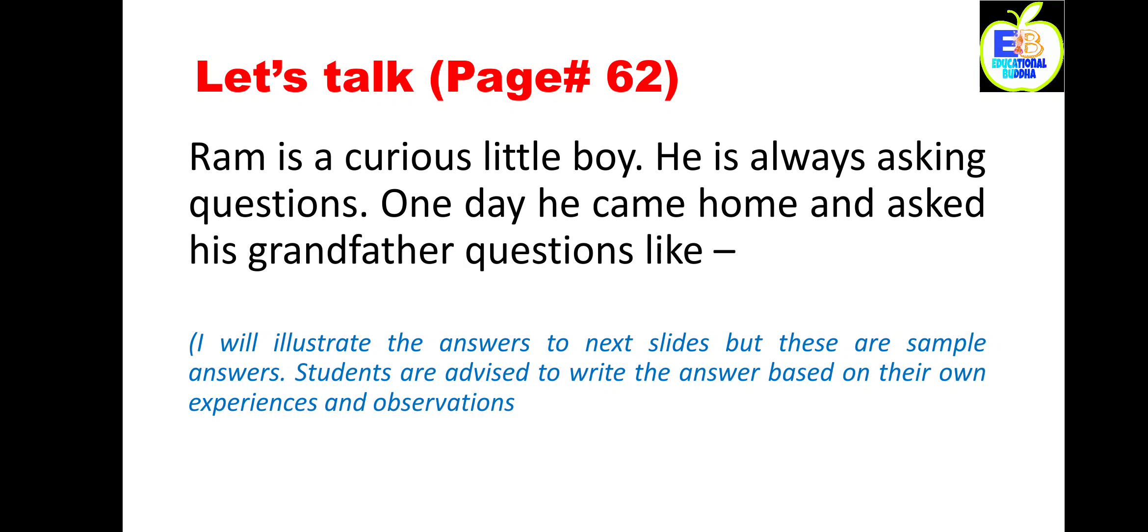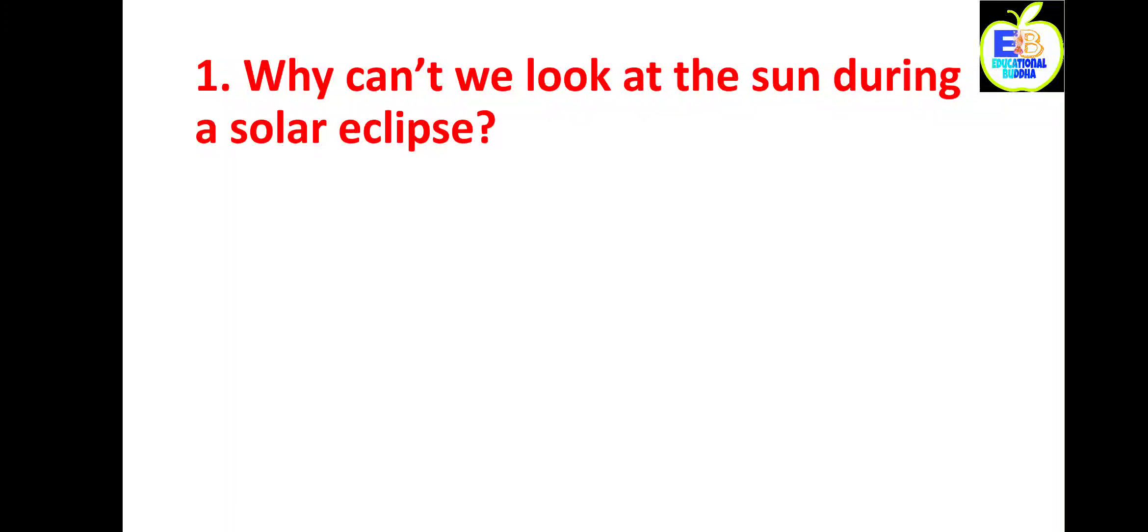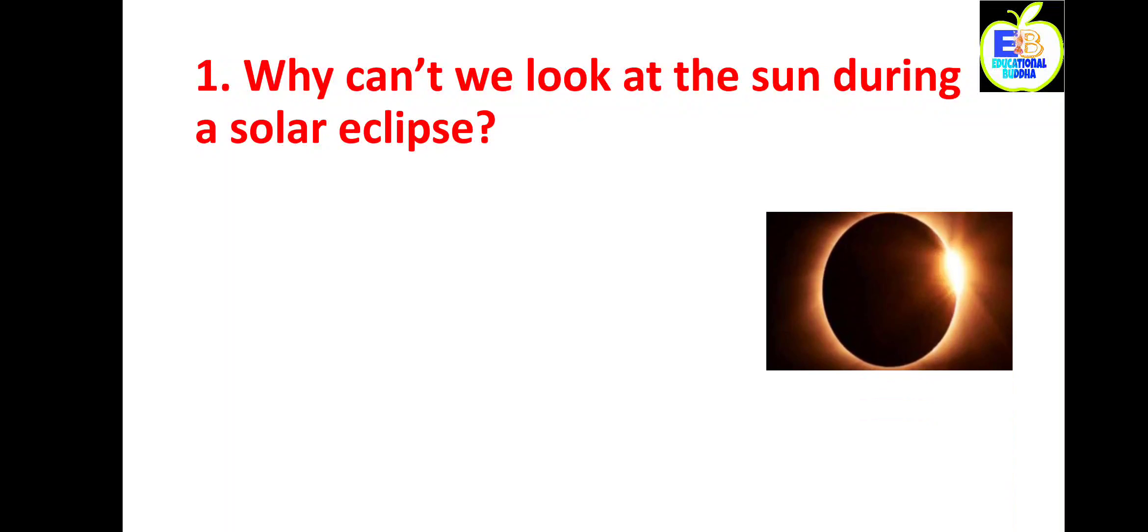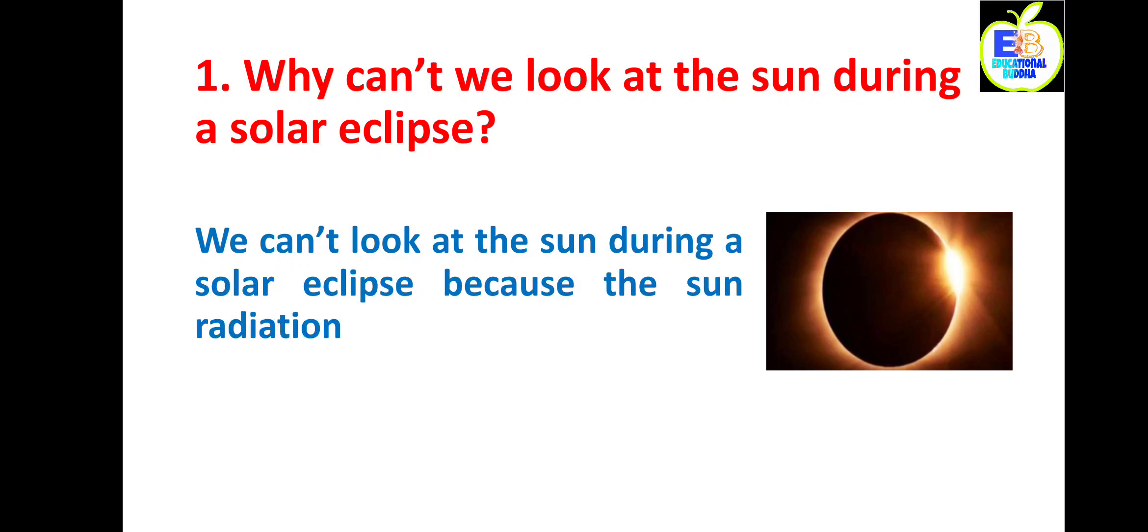So come to the first questions. Question number one: why can't we look at the sun during a solar eclipse? The answer is: we cannot look at the sun during a solar eclipse because the sun radiation can harm our eyes.